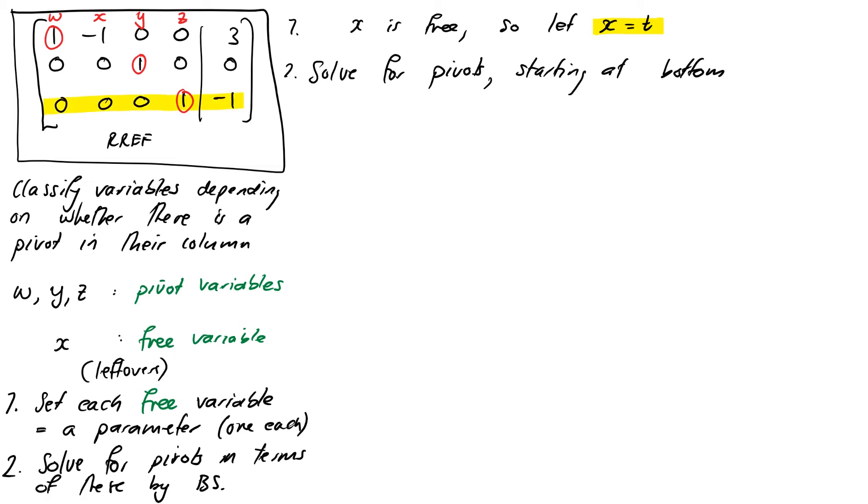And now we'll solve for the pivots starting at the bottom. The last equation says that Z equals -1. So nothing to do there. That's fine. Next equation up, that says that Y equals 0. And now the first equation, that says W minus X is equal to 3. Which if we rearrange that for W, remember we're solving for our pivot in terms of our free. That becomes W equals 3 plus X. Or W equals 3 plus T, because X is T.